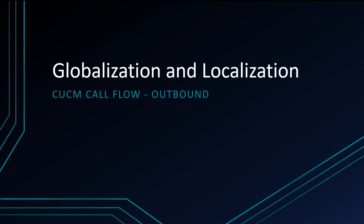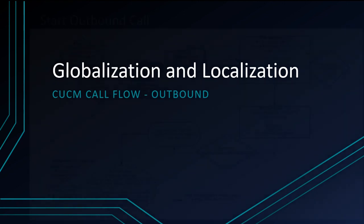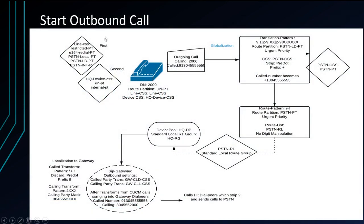So globalization and localization — we are going to start with a general overview diagram. We're going to take a look at how, once you lift a phone off hook, what all happens for the call flow going out. Now, if this is your first time dealing with Call Manager, this is going to look crazy. If you've been in it for a few years, this still might look quite a bit different than what you're used to for just a plain outbound call. But we're going to do some globalization on the ingress.